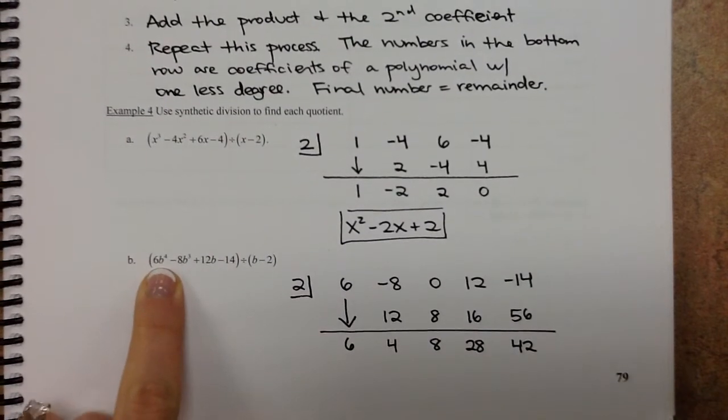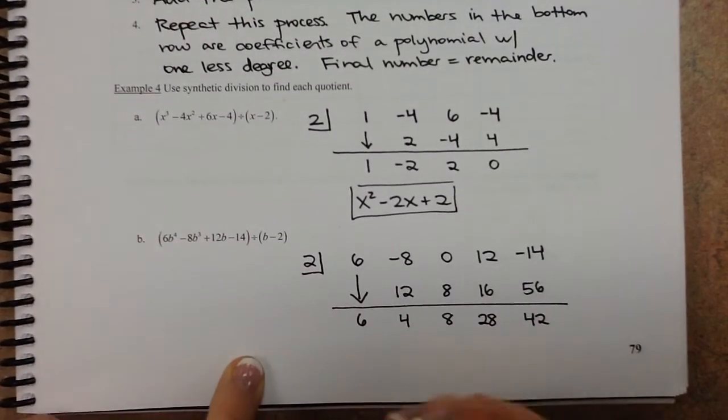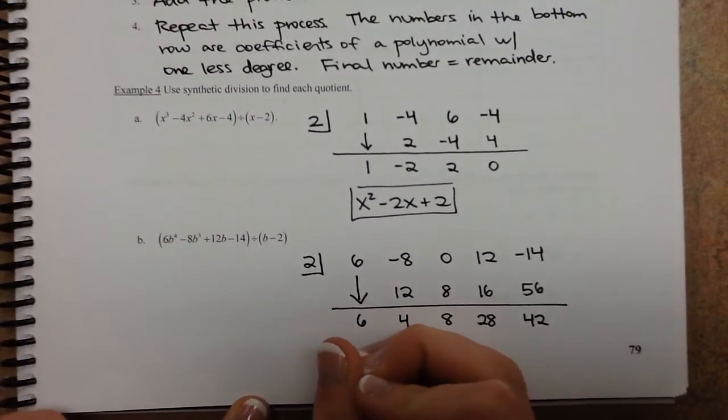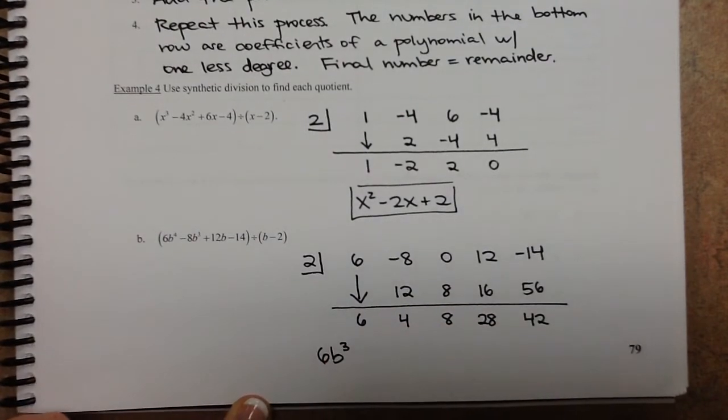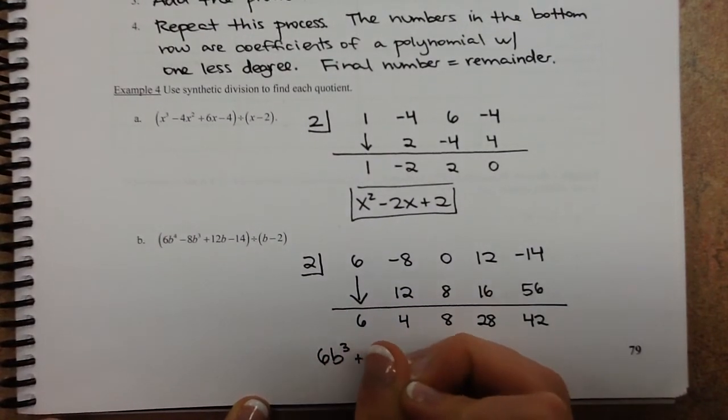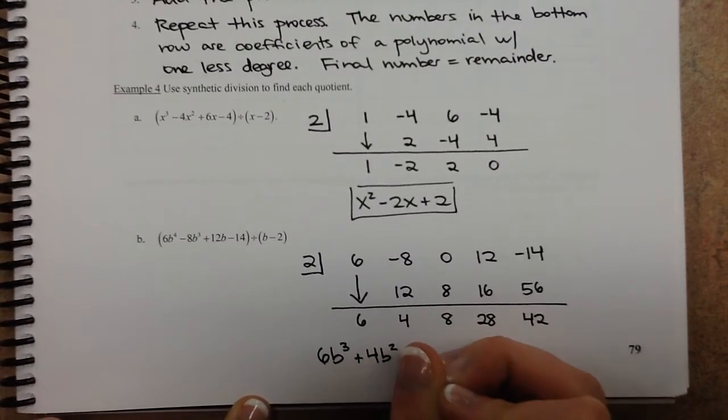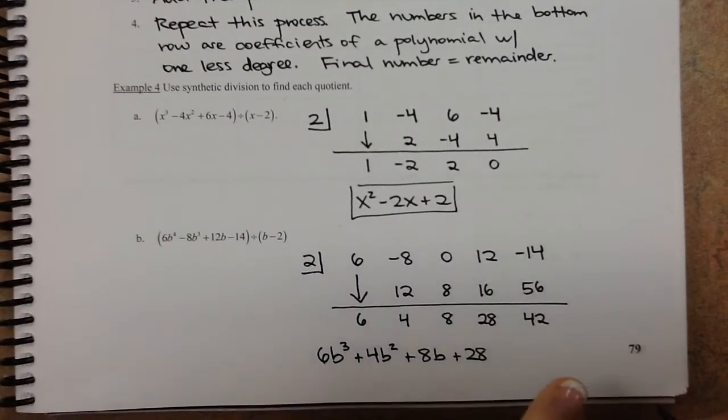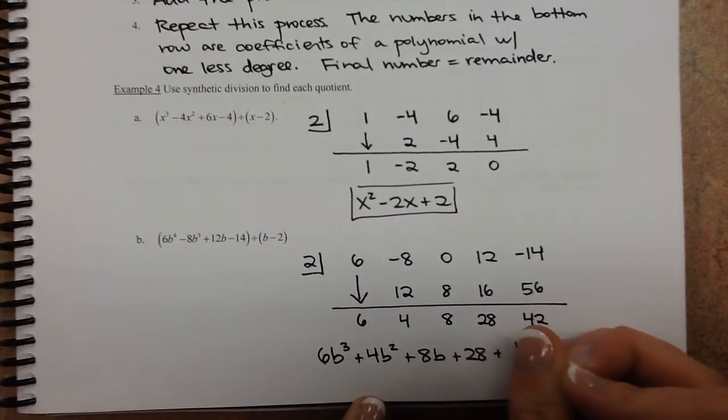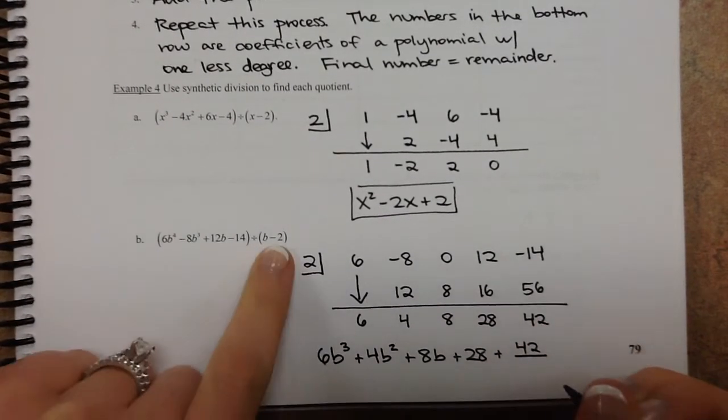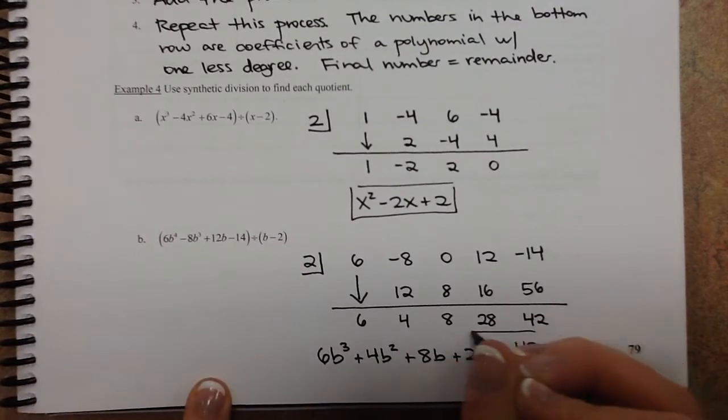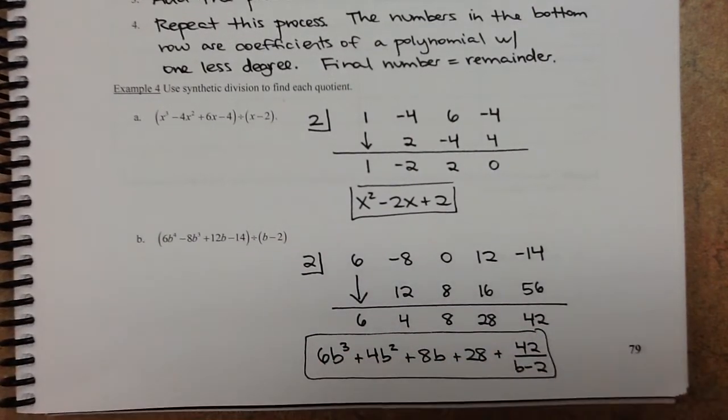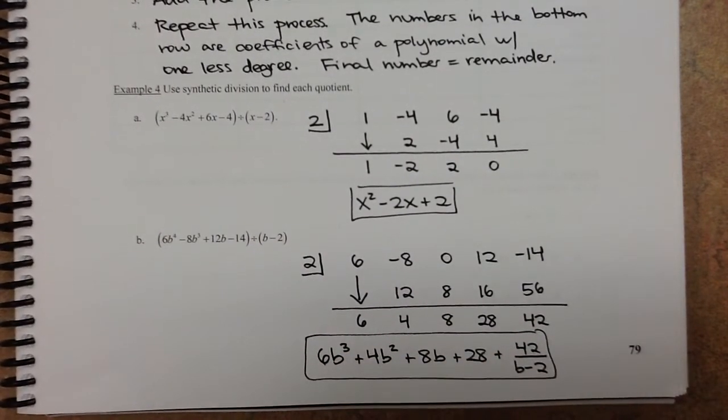The numbers are now a polynomial with one less degree. So this degree is 4, so we start tacking them on to a polynomial of degree 3. So 6b cubed plus 4b squared plus 8b plus 28. And then remember, this is the remainder. So we put 42 over the divisor, which is b minus 2. And that's your final answer. So once you get going, it's actually really, really quick.